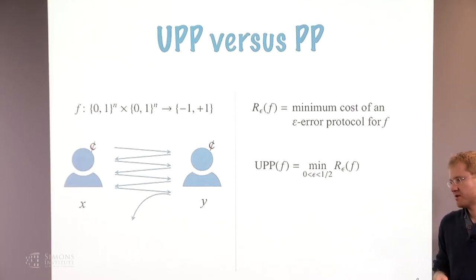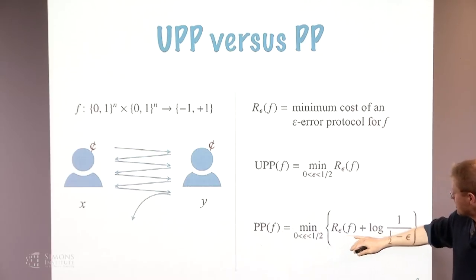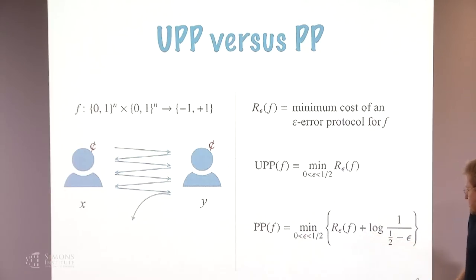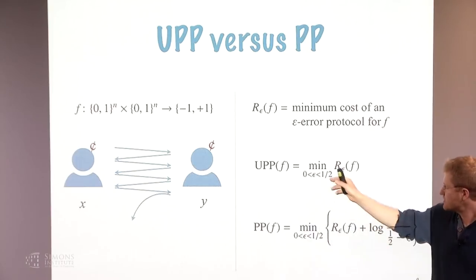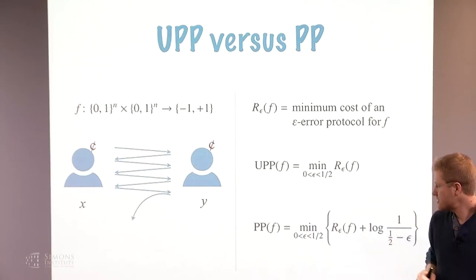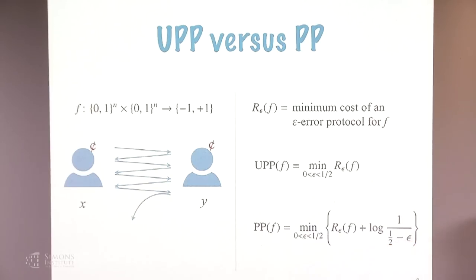The limit of communication complexity as the error parameter approaches one half is known as unbounded error communication complexity — a very well-studied notion, with mathematically rich connections to algebraic geometry and other ideas. You can also consider a slightly modified quantity where, in addition to communication complexity, you add a penalty term depending on epsilon: as epsilon approaches one half, the penalty term gets large, reflecting the decreasing advantage over random guessing. This is known as communication complexity with weakly unbounded error.